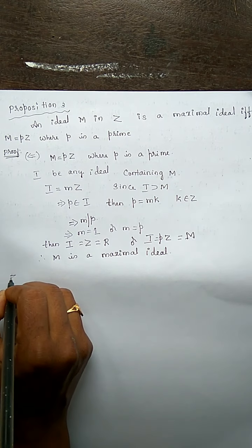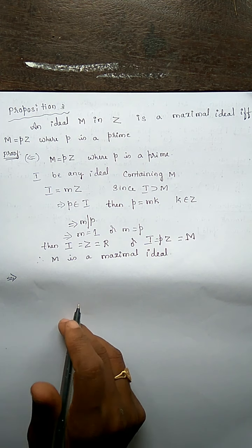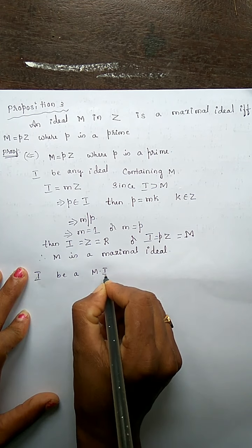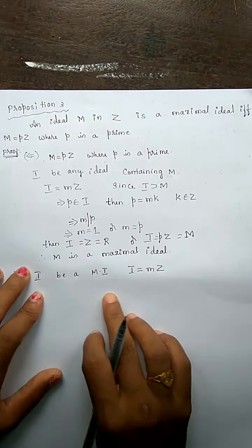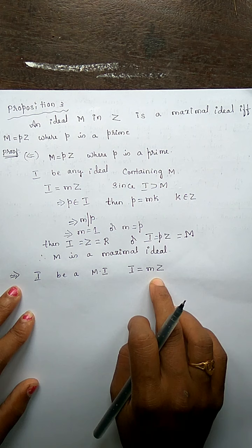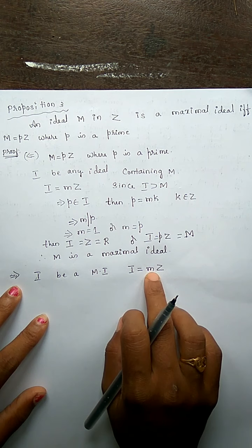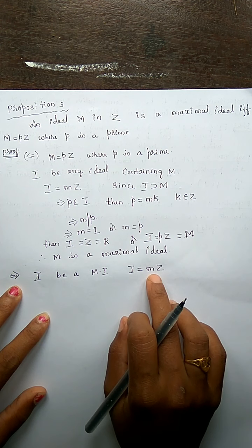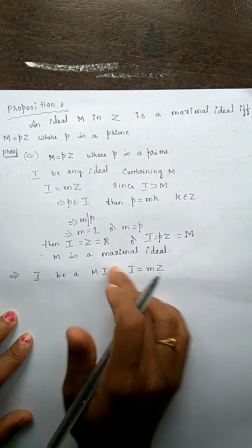Now let us prove the direct part. We assume M is a maximal ideal of Z, where M is equal to mZ. Our intention is to prove that m is a prime.